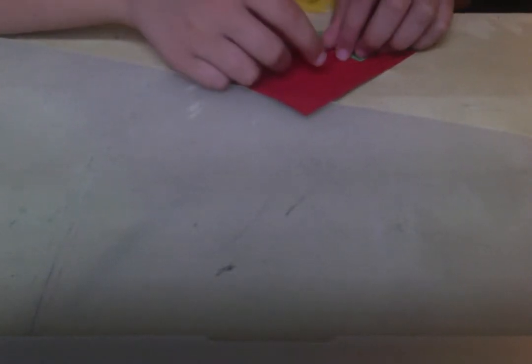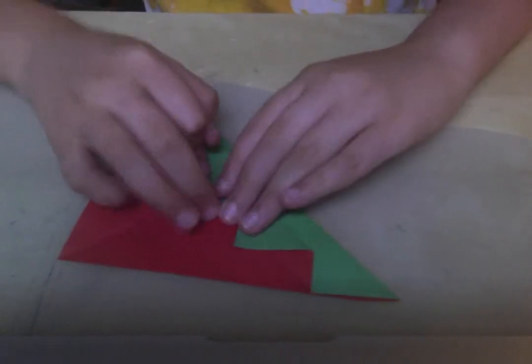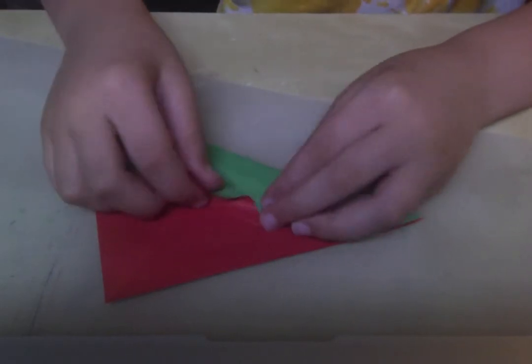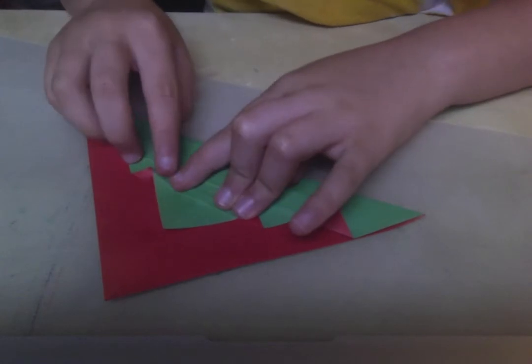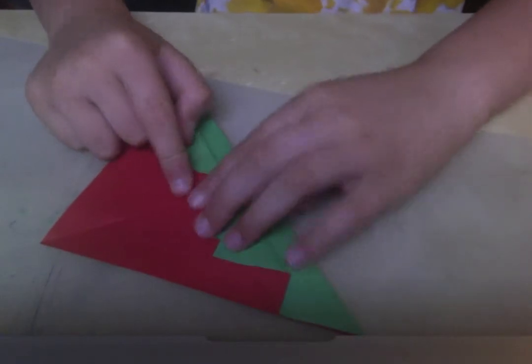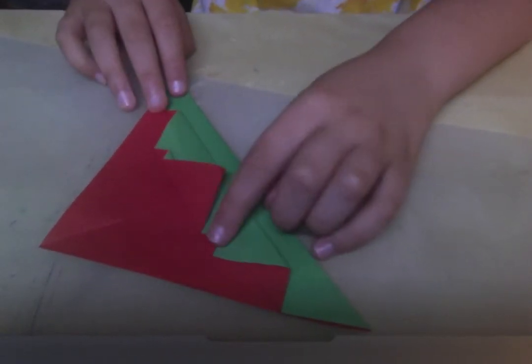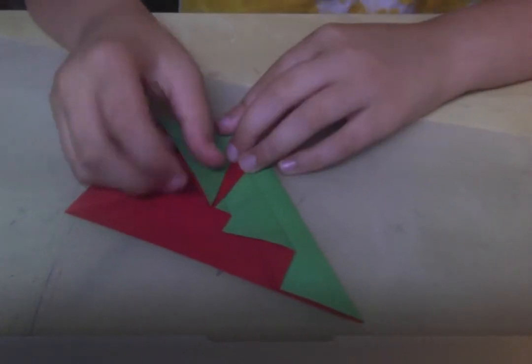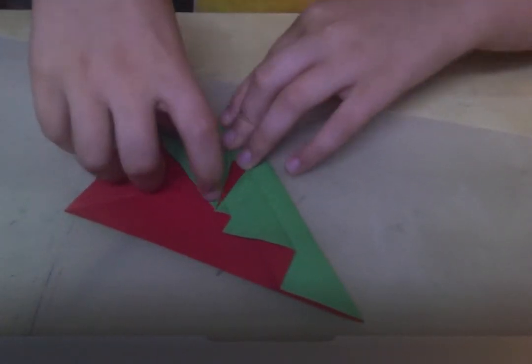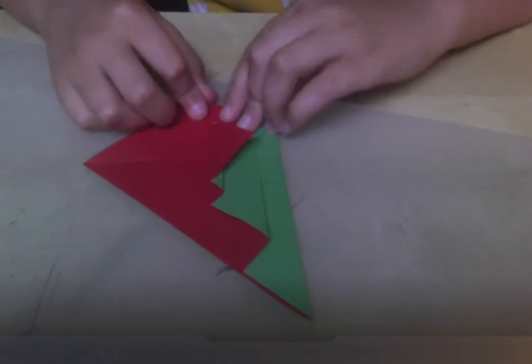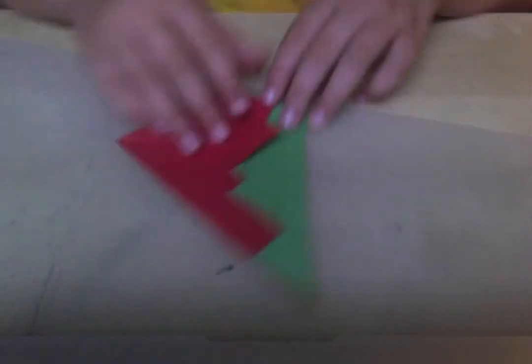And then fold that up along there. And then take that fold and fold it to that point. And then fold it up along that edge. And then fold it to that point. Like that. And then fold it up along that edge to make an ear.